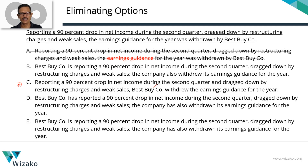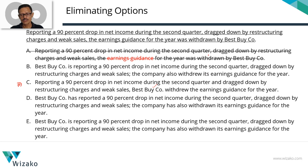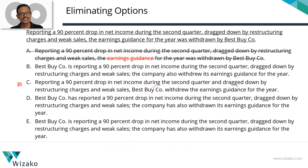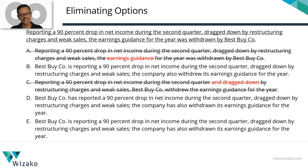Can a company be dragged down by restructuring charges and weak sales? The net income or profit of the company can be, but the company itself cannot be dragged down by restructuring charges and weak sales. Therefore, it is incorrect. Ideally, we would have wanted this part to be a parenthetical expression giving a cause for why the income dropped — as it is presented in answer option E. By having an 'and,' it becomes a list of two things happening to BestBuy, where the second thing — being dragged down by restructuring charges — doesn't make sense. So answer option C can be eliminated.